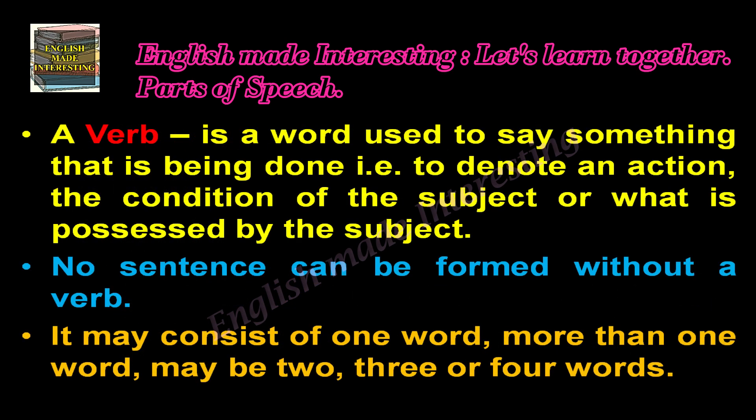Now what's a verb? A verb is a word used to say something that is being done — that is, to denote an action, the condition of the subject, or what is possessed by the subject. No sentence can be formed without a verb. It may consist of one word, more than one word — maybe two, three, or even four words.